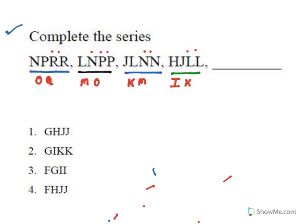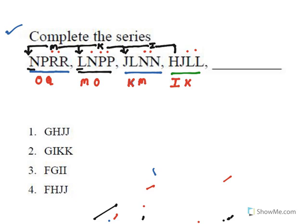Now let us look at the series starting from H. After H comes I, which is omitted, and J is given. After J comes K, which is omitted, and L is given. After L comes M, which is omitted, and N is given. The first alphabet in each group follows a pattern too — H, J, L, F. So the next group begins with F.